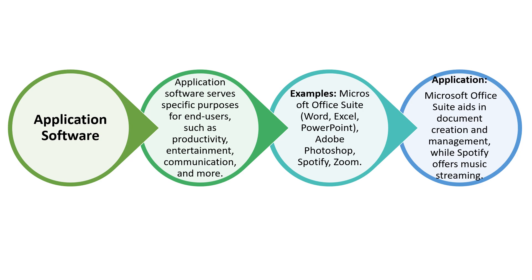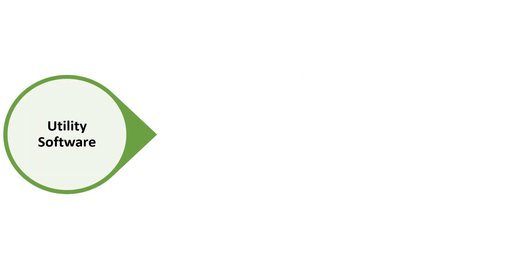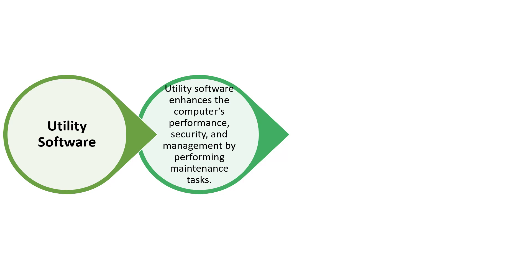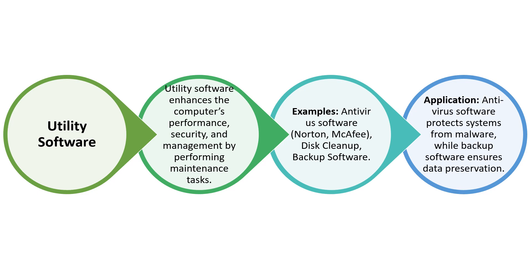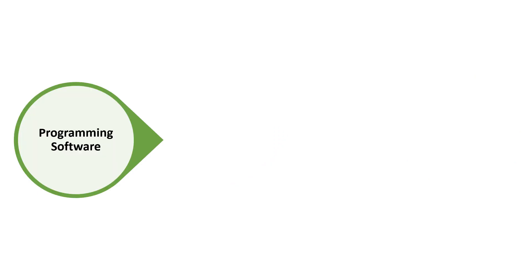Next is utility software. This is a specific type that enhances the computer's performance, security, and management by performing maintenance tasks. Examples are antivirus software like Norton, disk cleanup, and backup software. Antivirus software protects systems from malware, while backup software ensures data preservation.